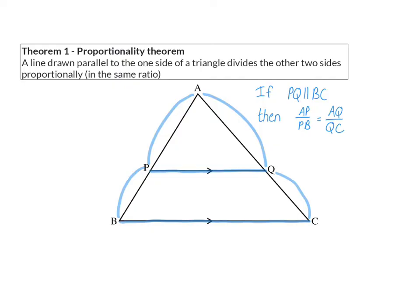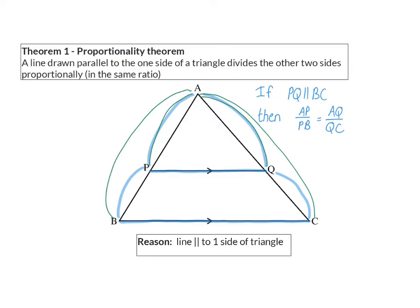This ratio is just one of a few options. We can swap those around and say PB over AP, or we can even look at the full side AB with one of the two smaller parts, for example AP, and that will be the same ratio as AC over AQ. So by using this theorem, there are quite a few proportionalities we can write down. When you use this theorem to write down one of these proportions, your reason will be 'line parallel to one side of a triangle.'